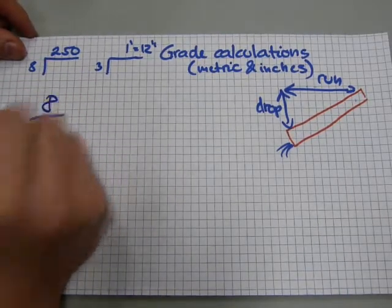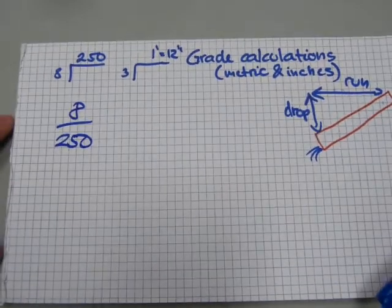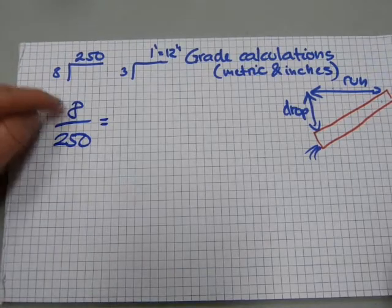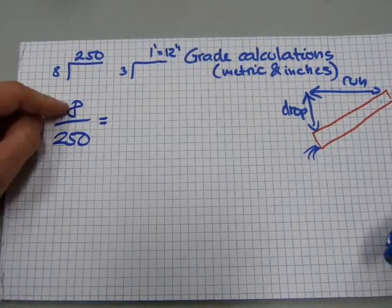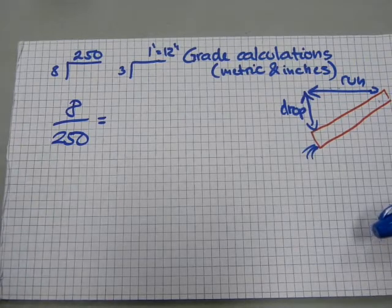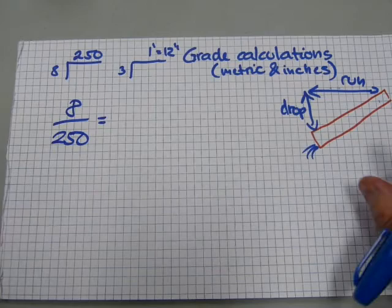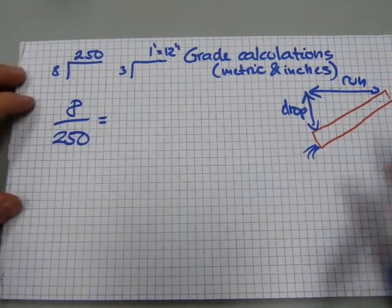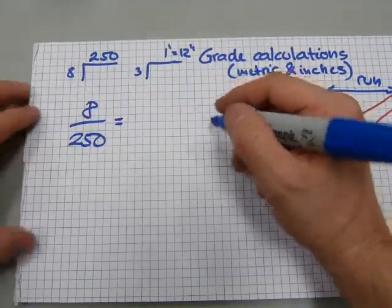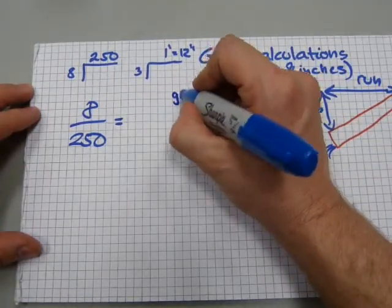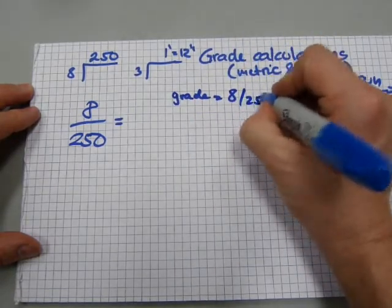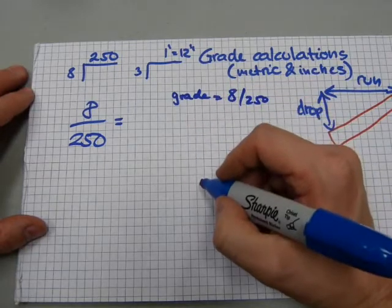An 8 over 250 grade, and it's important that in a ratio and fraction calculation you write the drop in the numerator and the run in the denominator. Grade is given, that's the grade, so grade equals 8 over 250.